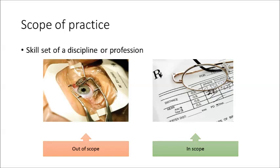Scope of Practice relates to the skill set of a discipline or profession. For example, looking at the scope of practice for orthoptists, surgical management of a patient is what we'd consider out of scope for orthoptists, as shown there on the left-hand side with a patient having eye surgery. But refracting and prescribing glasses on the right-hand side is what we classify as in scope.